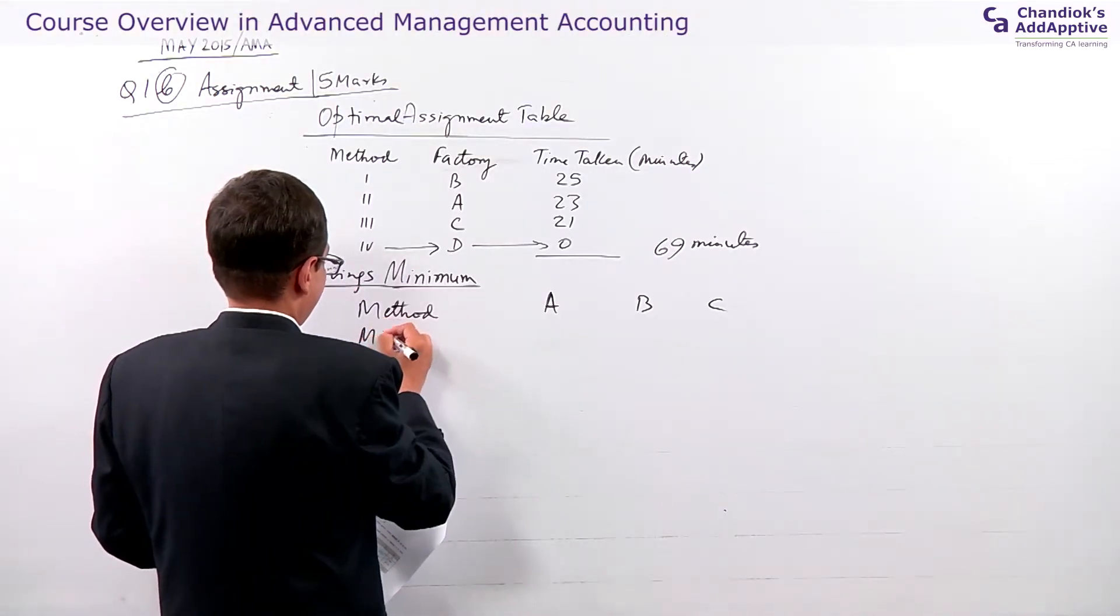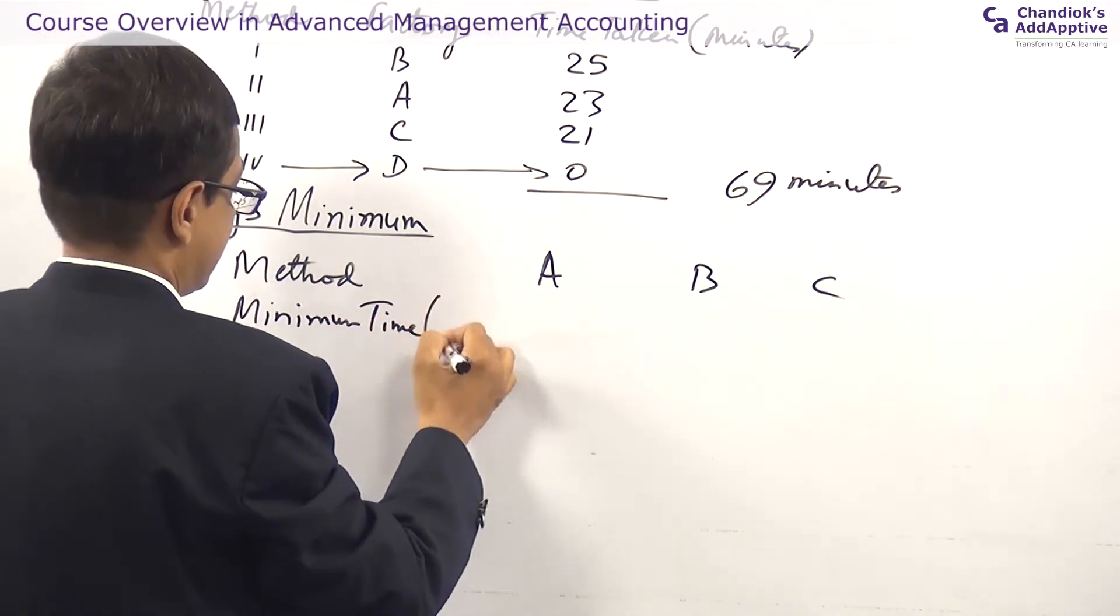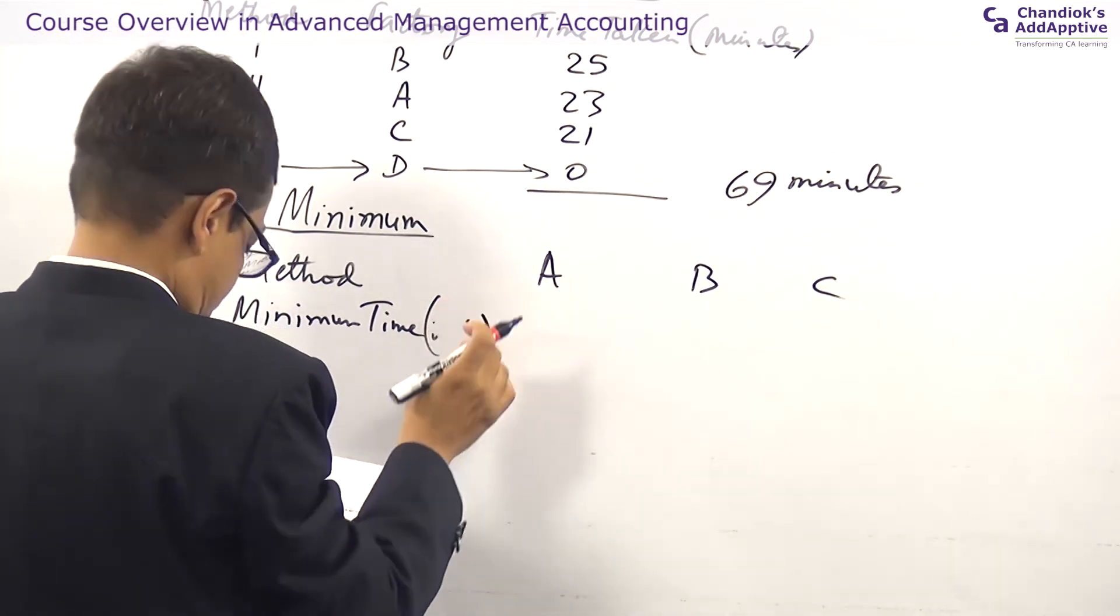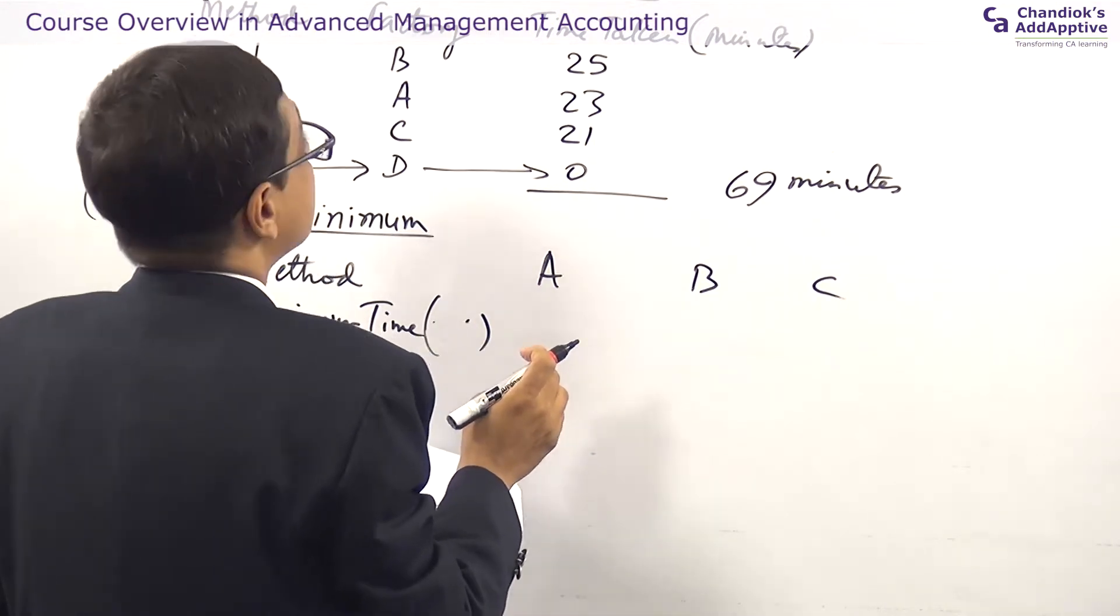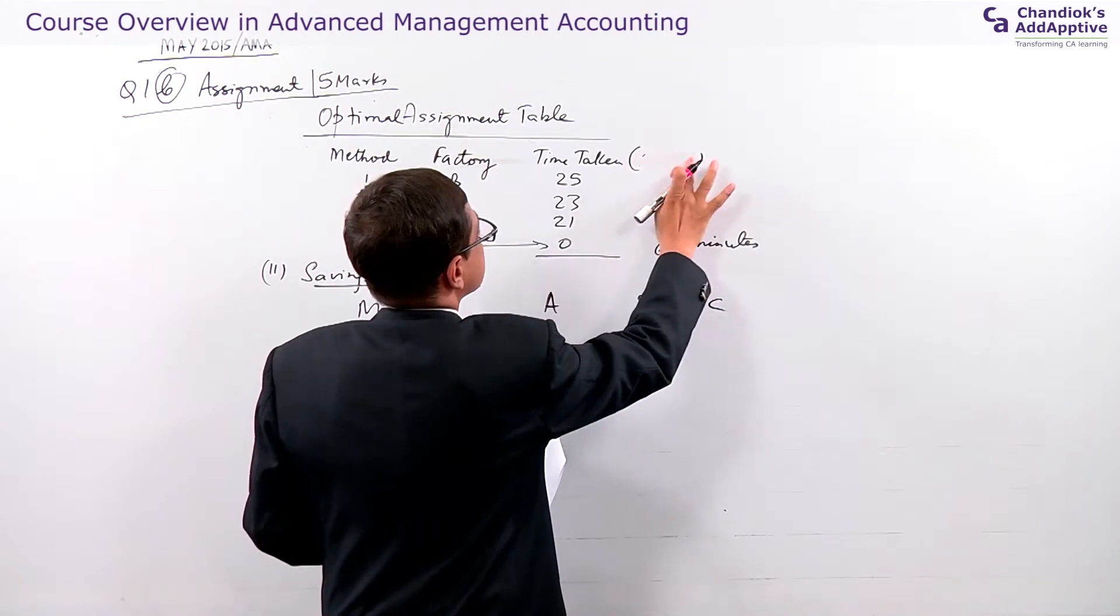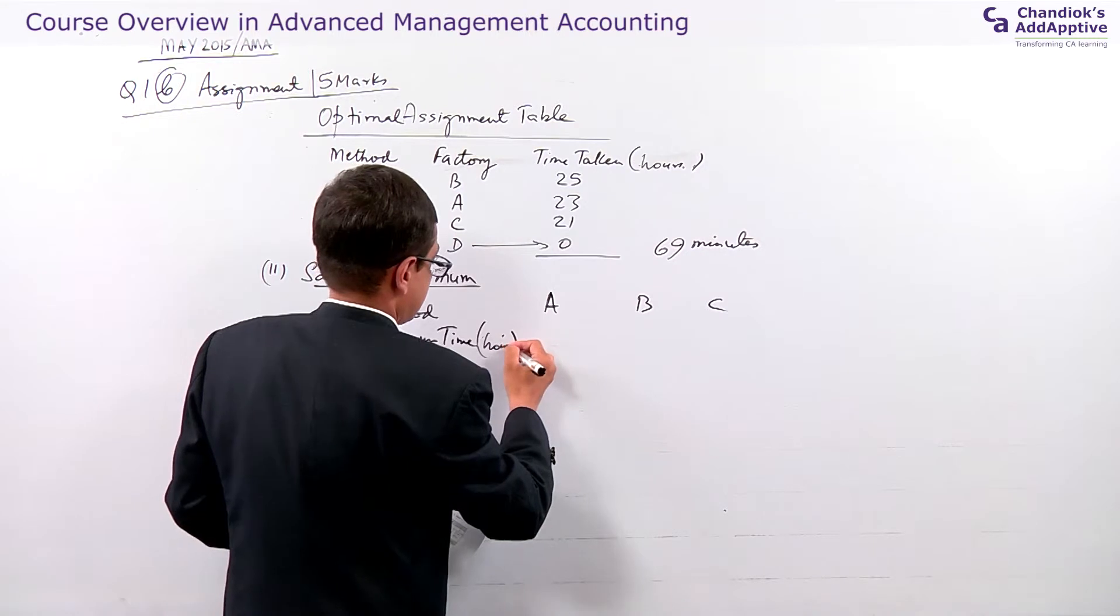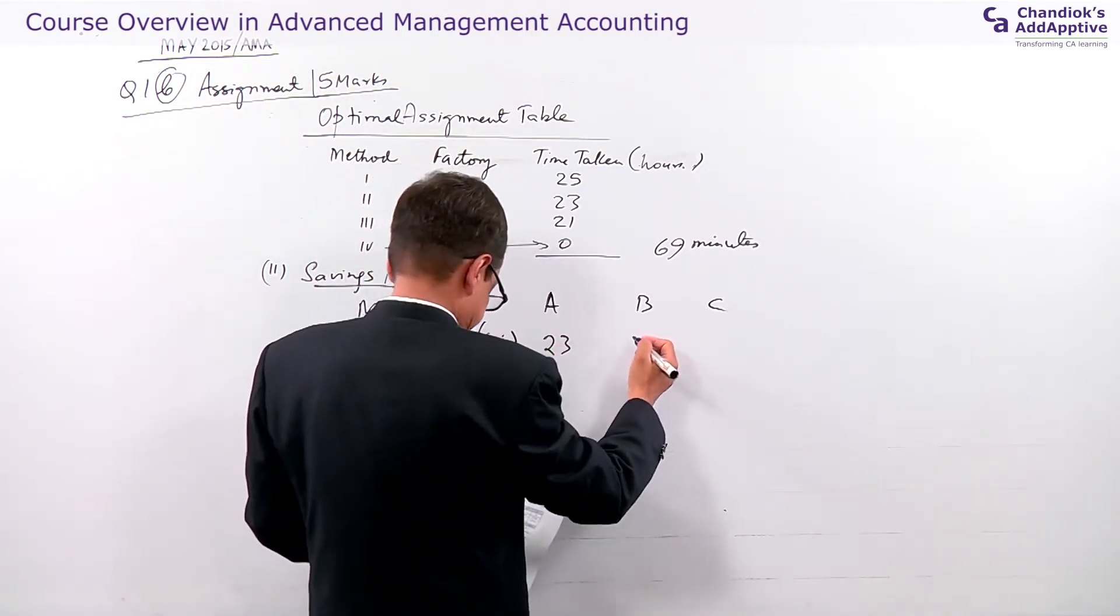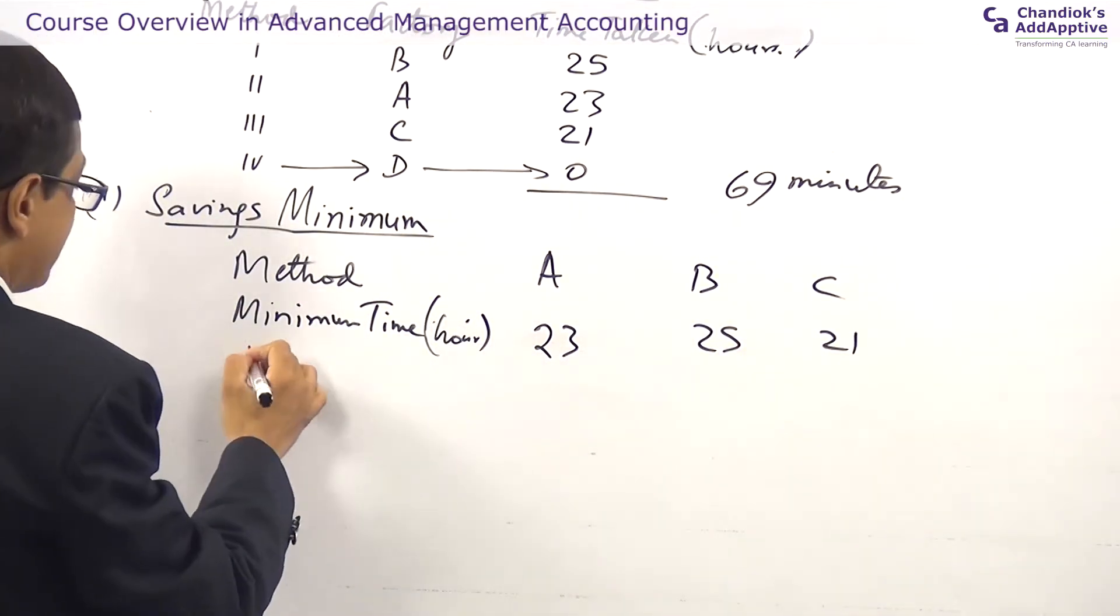Minimum time which you are taking in minutes - this time what you are taking is with respect to hours. So I need to correct it again. This is hour, this is hour. The unit is hour. So it is 23 hour, this is 25 hour, this is 21 hour. Time required.